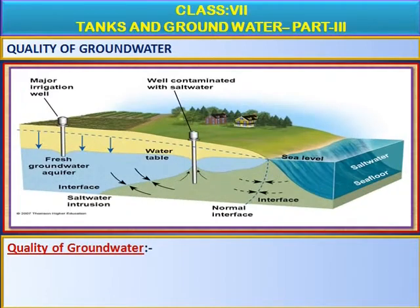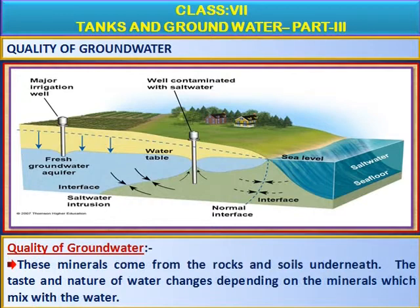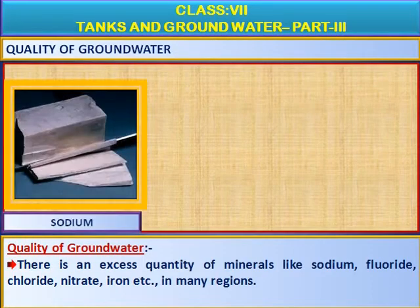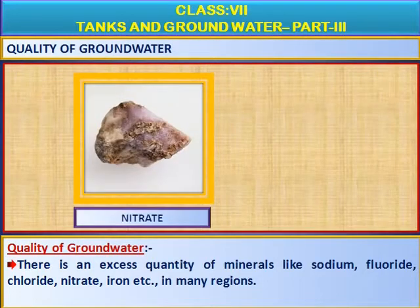Now let us learn the quality of groundwater. Different kinds of minerals are mixed in the groundwater. Because of the minerals which are dissolved in the groundwater, the taste of the groundwater will be salty and sometimes sweet. These minerals come from the rocks and soil underneath. The taste and nature of water changes depending on the minerals which mix with the water. There is an excess quantity of minerals like sodium, fluoride, chloride, nitrate, iron, etc. in many regions.